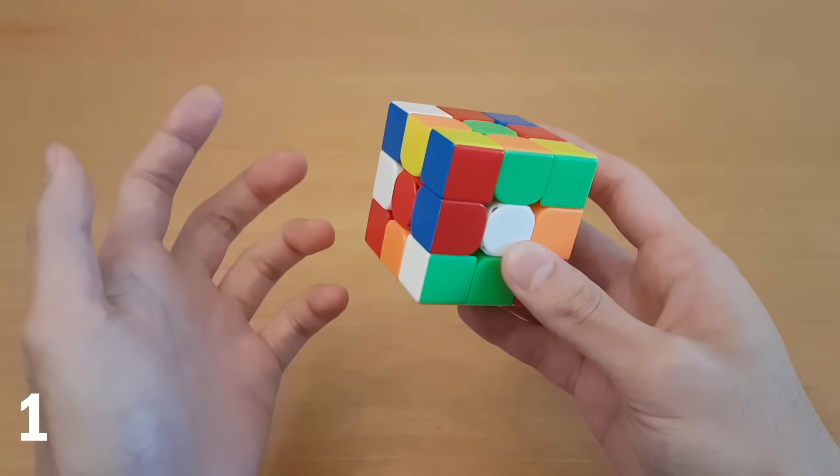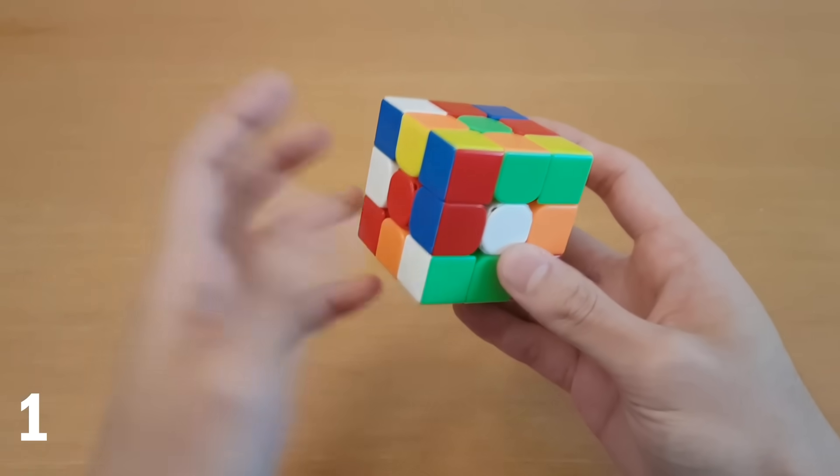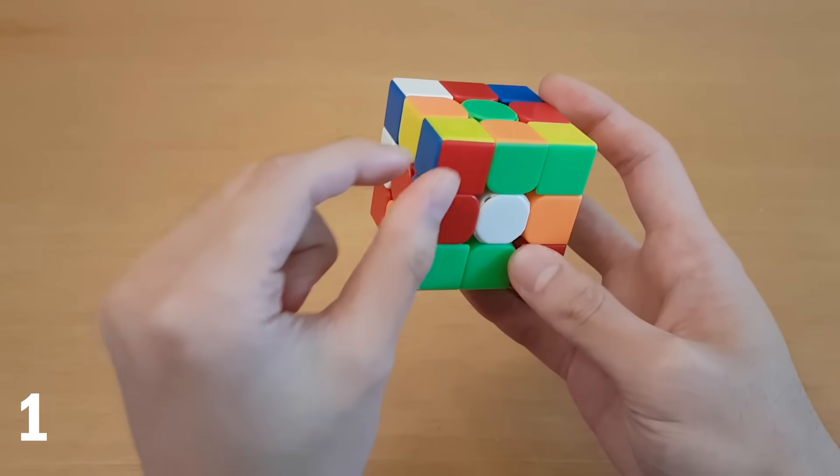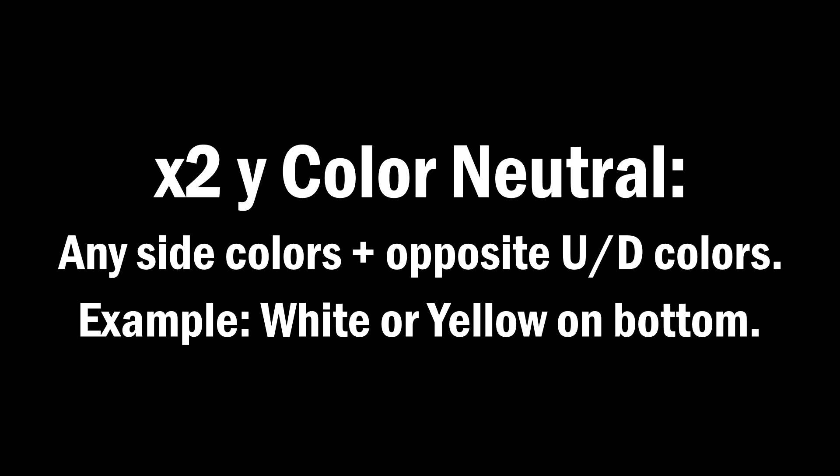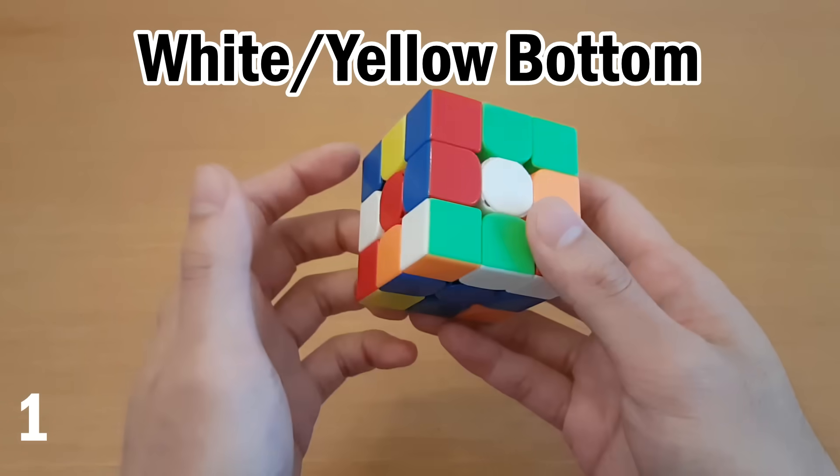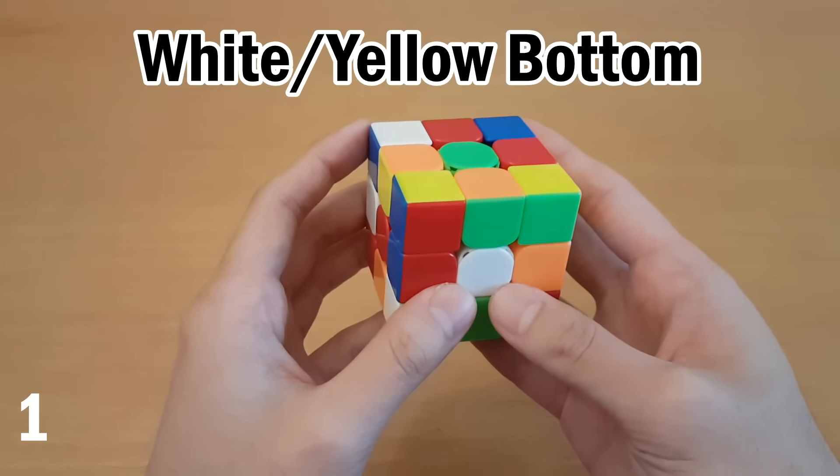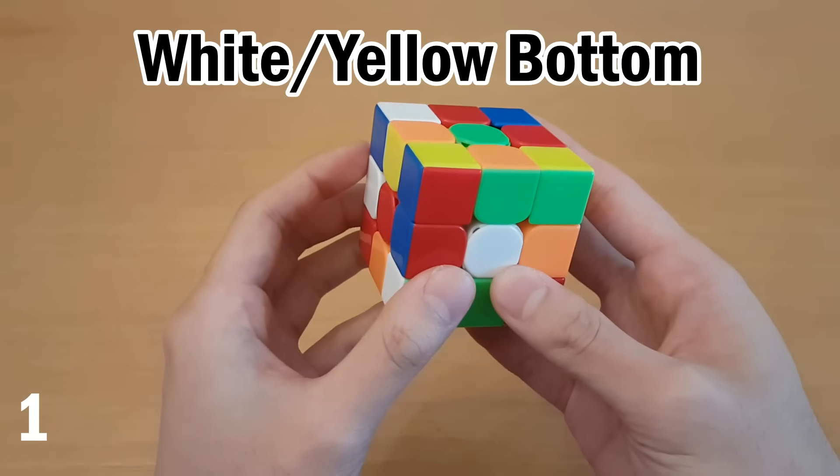Number one, using any pair. Not every scramble has a corner edge pair made, but often there will be one. And if you use a more fixed color scheme, such as white on the bottom, then you cannot use a pair like this. So in order to use any pair on the cube, you have to be what's called X to Y color neutral. So being able to start with white or yellow as your bottom color will help you take advantage of any pair you see on the cube.